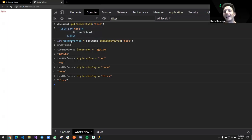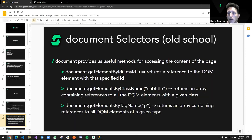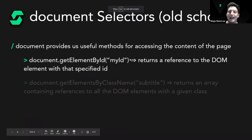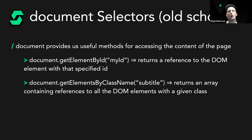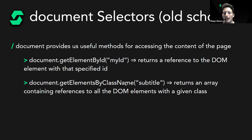We can also get elements by class name with `document.getElementsByClassName()`. Note the 's' — because unlike ids which are unique, many elements can share a class. So the result is not a single reference but an array containing multiple references. For example, if we have five `<li>` elements each with class 'list-item', the result will be a collection of five elements.